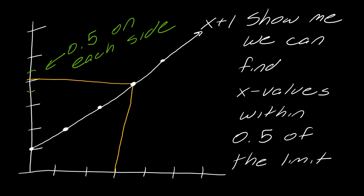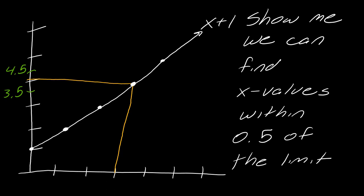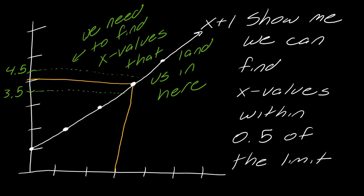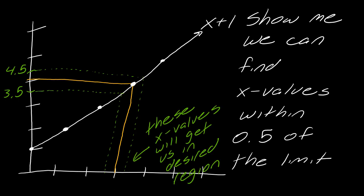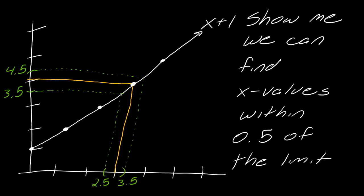We want to find x values within a certain distance of the limit. Because if we're this distance around the limit, I believe we're getting closer and closer to it and that we found the right limit. If I think about 0.5 on each side of the limit, that would be from 3.5 to 4.5. We need to find x values that land us in that zone. Using the graph to help us, the x values that will get us there are 2.5 and 3.5 — a pretty simple calculation.